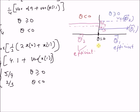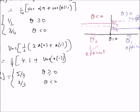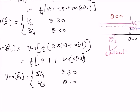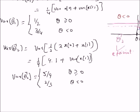From this example, we can learn that the efficiency of an estimator can depend on the sign of the parameter. For positive thetas, estimator theta-hat₁ is more efficient, and for negative thetas, theta-hat₂ is more efficient. Hence, there is a possibility that given a set of estimators, none of them is a minimum variance unbiased estimator for all possible values of the parameter. Thanks for watching.